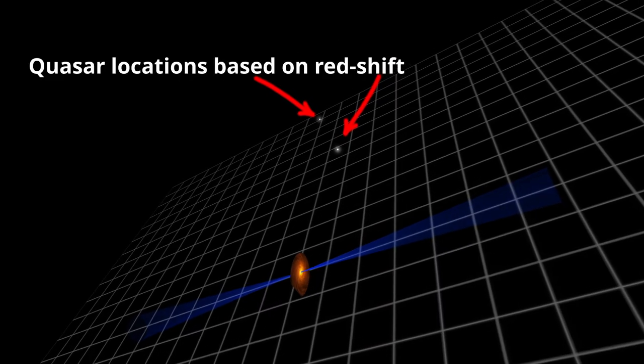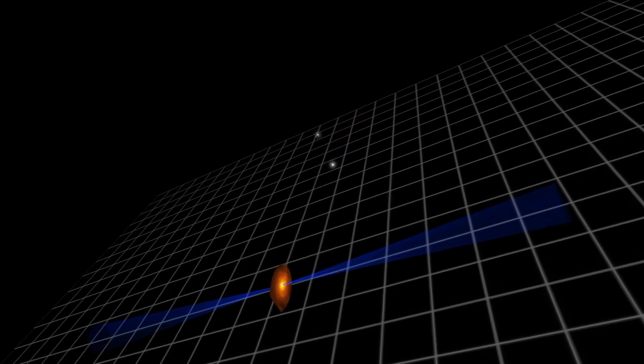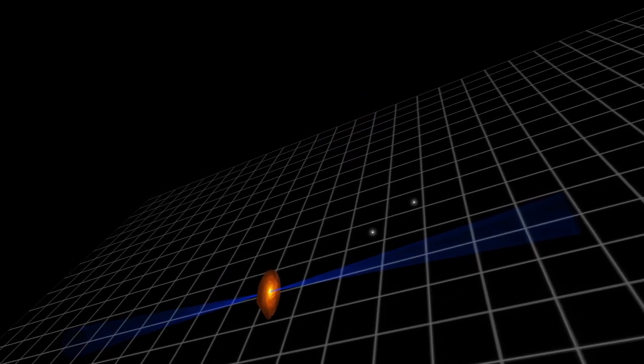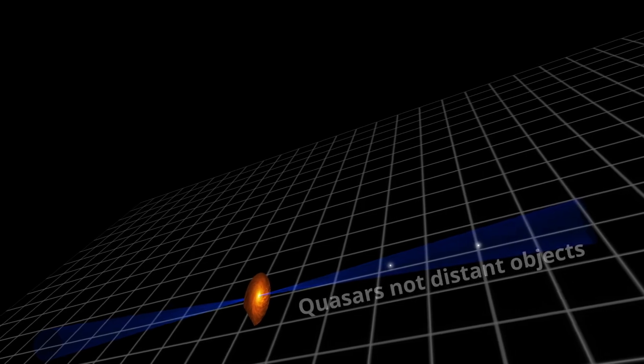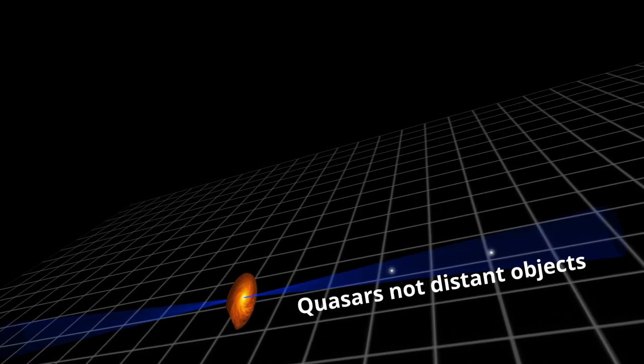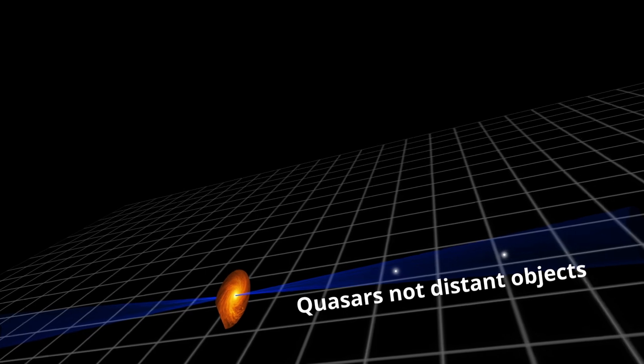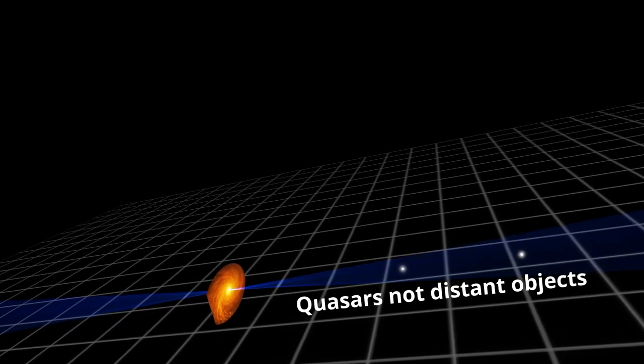The second possibility is that the quasars are not at cosmological distances. Although hotly disputed back in the 1970s, there is now evidence that shows quasar host galaxies at high redshifts, making this an unlikely possibility in his view.